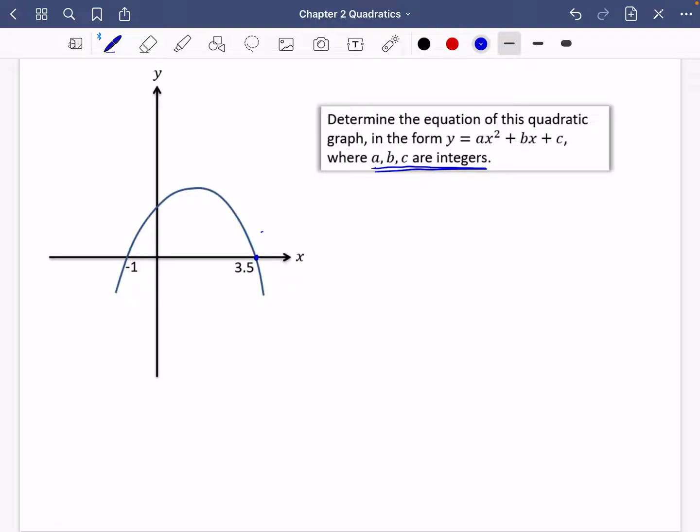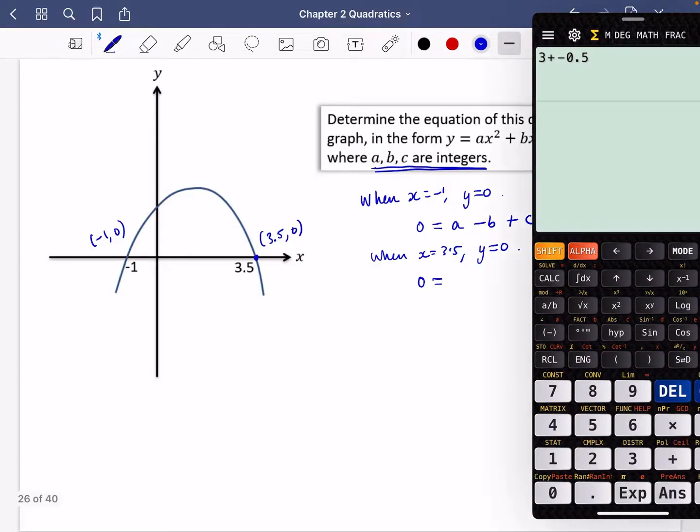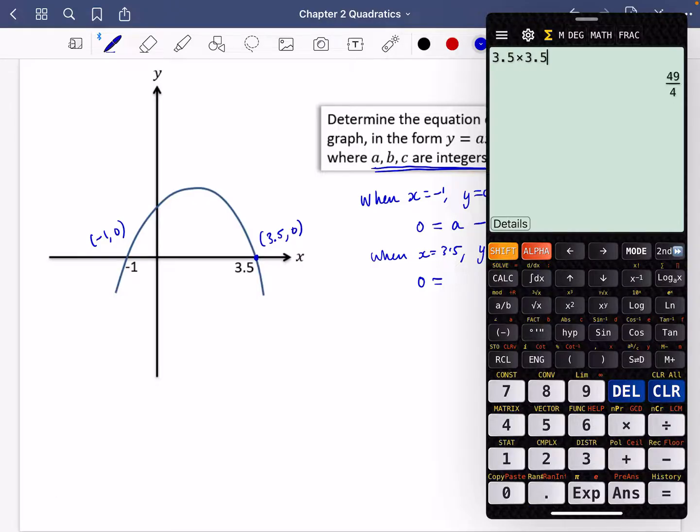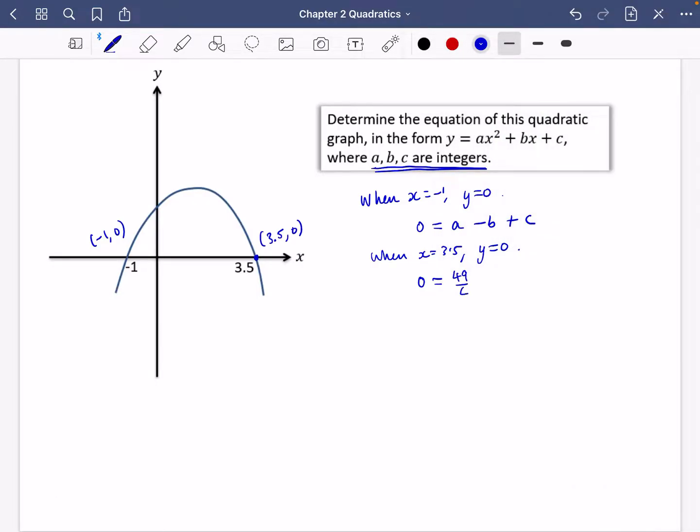Let's see what happens. We've only got a couple of coordinates this time. So I've got x is 3.5 and y is 0, and we have x is minus 1 and y is 0. So when x equals minus 1, y equals 0, we get 0 equals a minus b plus c. When x equals 3.5, y equals 0, so we get 0 equals 49 over 4 a plus 7 over 2 b plus c.